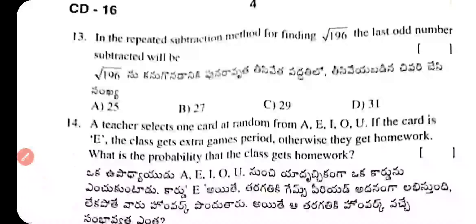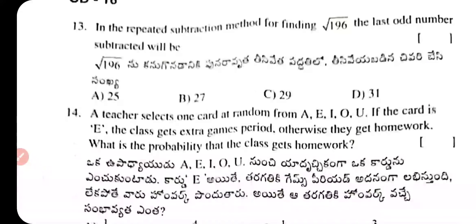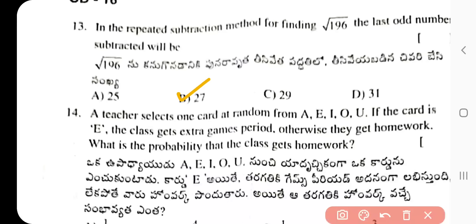Question 13: Using the repeated subtraction method for finding the square root of 196, what is the last odd number subtracted? The answer is 27. Option B is the correct answer.